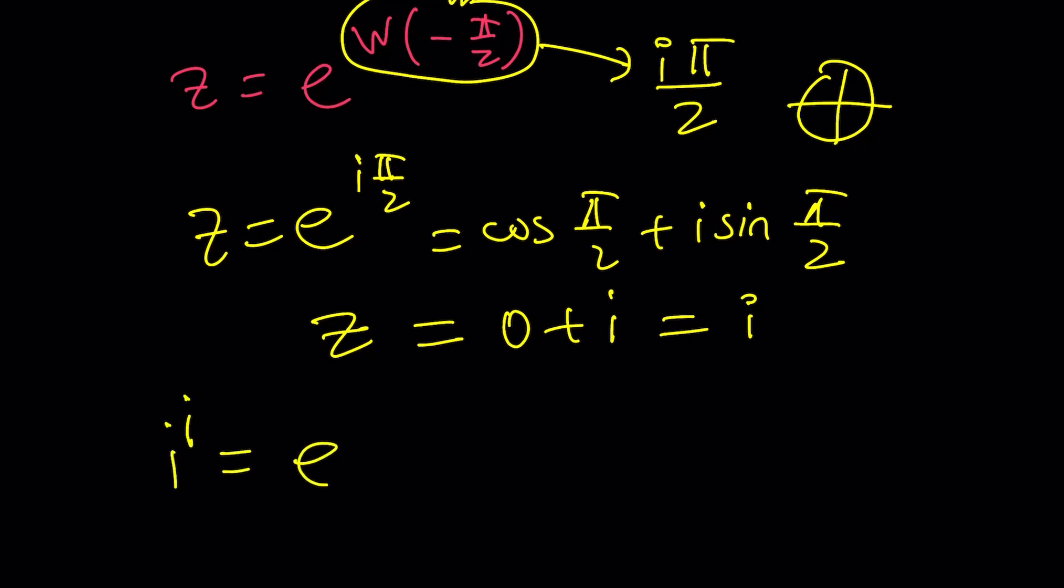Well here's the thing if you didn't: i to the i is e to the power i pi over 2 to the power i which is e to the power, come on okay I'm ahead of myself, e to the power i squared pi over 2 which is e to the power negative pi over 2.